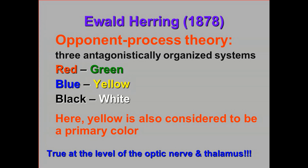There are cells in the optic nerve and in the thalamus where exposure to red light causes them to change their firing rate — they become very excited — but they're also inhibited by green. There are other red-green units that get excited by green and inhibited by red. There are blue-yellow units excited by blue and inhibited by yellow, or excited by yellow and inhibited by blue. Today, we know that both trichromatic theory and opponent process theory hold true — it's just a matter of the level of the visual system. Trichromatic theory is true at the level of the retina, while opponent process theory is true at the level of the optic nerve and the thalamus.